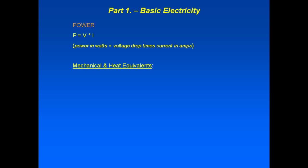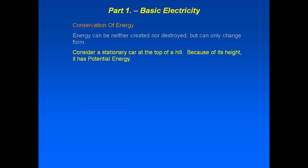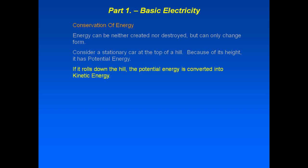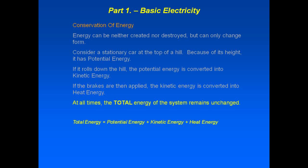Electrical power is measured in watts. There are also mechanical and heat equivalents: a perfectly efficient 1 horsepower electric motor consumes 746 watts, and 1 watt has a 3.4 British thermal unit per hour heat equivalent. The conservation of energy states that energy can be neither created nor destroyed, but can only change its form. Consider a stationary car at the top of a hill — it has potential energy. If it rolls down the hill, potential energy converts to kinetic energy. If the brakes are applied, kinetic energy converts to heat energy, and at all times the total energy of the system remains unchanged.